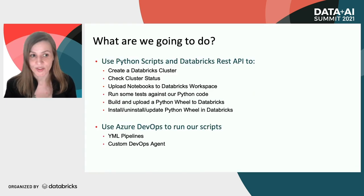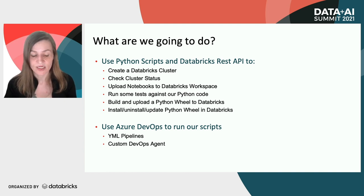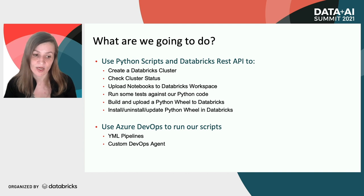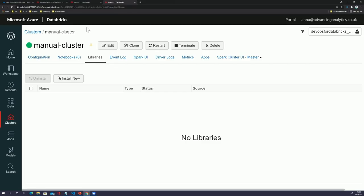Our real world example: we're going to use Python scripts and the Databricks REST API to create a Databricks cluster, check cluster status, upload notebooks to the Databricks workspace, run some tests against our Python code, build and upload a Python wheel to Databricks, install and update Python wheels in Databricks, and then use Azure DevOps to run our scripts — our YAML pipelines — and we'll look at the custom DevOps agent I've set up.